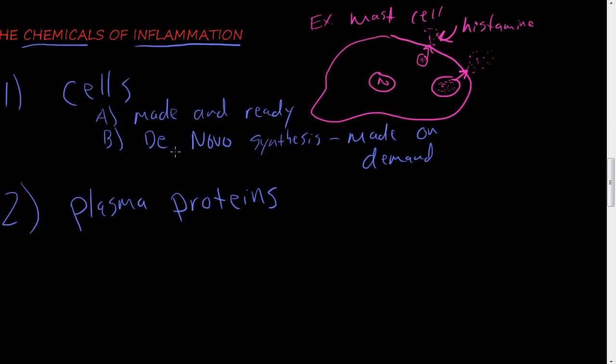The second type, or the second subset of the chemicals that are in cells, is they're made on demand. In this case, we would undergo, the DNA inside the cell would be read.